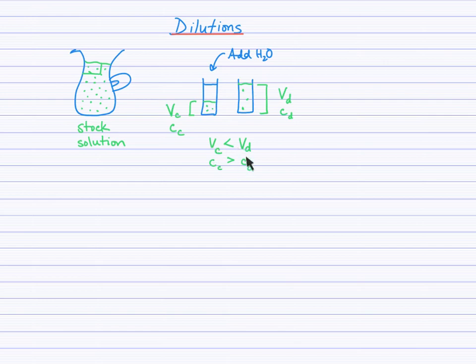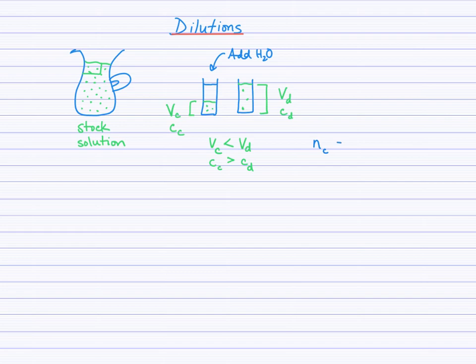So if the volumes and concentrations of these two solutions are different, what is actually the same? What variable is equal when you look at the stock solution volume and the new diluted solution volume? It's not the volume and it's not the concentration. It's actually the number of particles — or as we group them, moles of solute. There were three dots in the concentrated solution, and the same three dots of solute spread throughout the diluted solution.